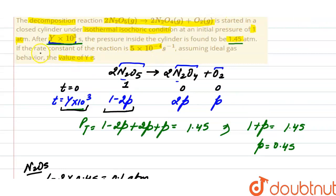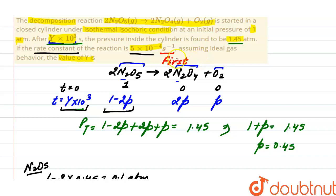The rate constant of this reaction is 5 into 10 raised to the power minus 4. The key point is that the units of this rate constant are per second, and from these units we can easily find out that it is a first-order reaction, because in a first-order reaction the rate constant has the units per second.